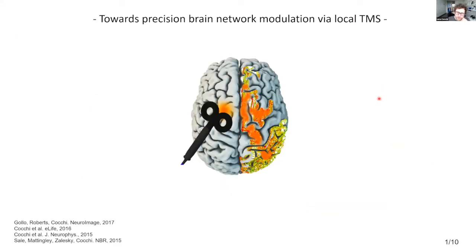My general interest in brain stimulation was on the use of this technique to try to understand how local change in circuits or neural circuits that generally underpin some functionally specific function may impact the whole system — the whole brain. The question was whether these network effects were selective to networks that support the same function as the targeted brain region, or were more diffuse, and if they were driven by context or not.